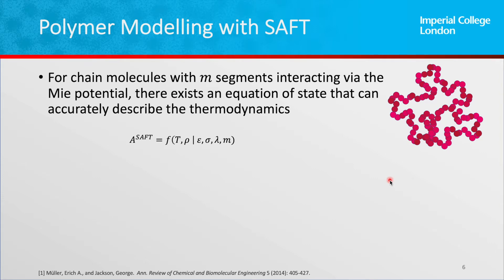Imagine now we have a pearl necklace model. We know how these polymers interact with each other using a Mie potential, and we know exactly what the parameters are. We could feed that directly into the equation of states to predict the thermodynamic macroscopic descriptions of the system.